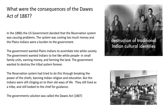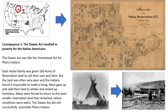We're now going to move on to look at the government's new solution to this assimilation problem. What was going to replace the reservation system? The government's solution was called the Dawes Act of 1887. We're now going to understand what the Dawes Act was and the consequences it had for Native Americans — and they weren't good consequences.